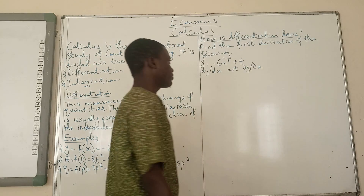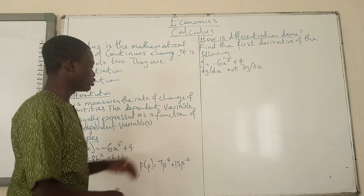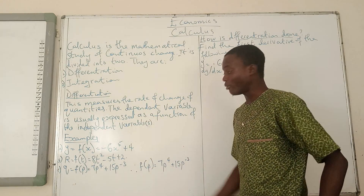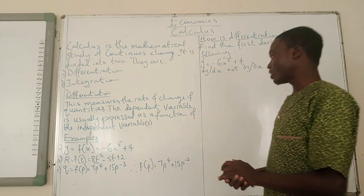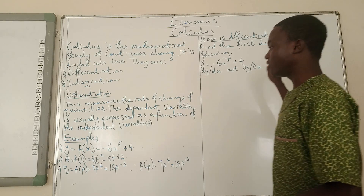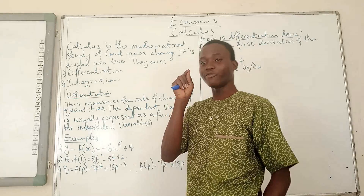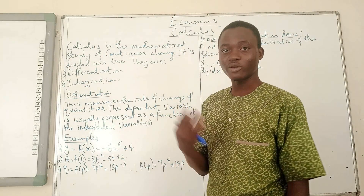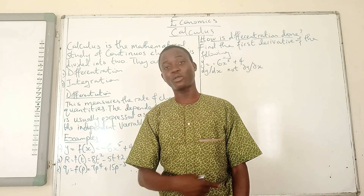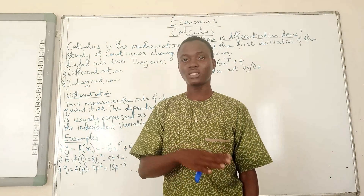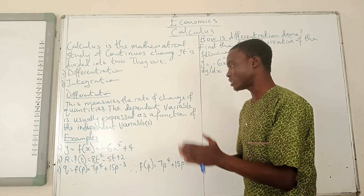How is differentiation done? It's not a big deal. We want to find the first derivatives of the following functions. Finding the first derivative means finding the change in y — the change in each of the dependent variables — from the very first change in each of the independent variables. We could have multiple derivatives: the first derivative, the second derivative, the third derivative, and so on. Because this is the initial class on calculus, we start from what is simple.